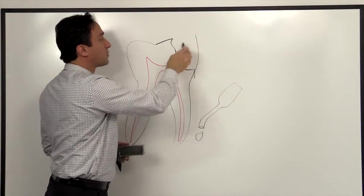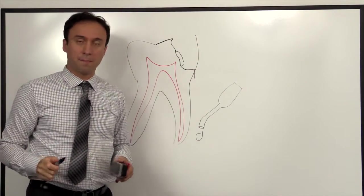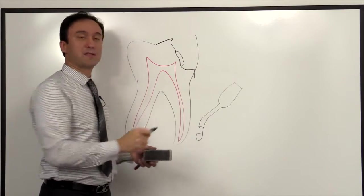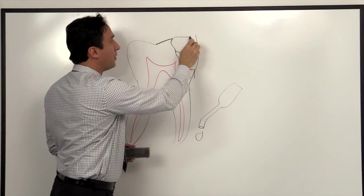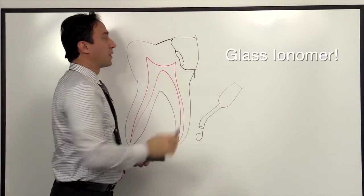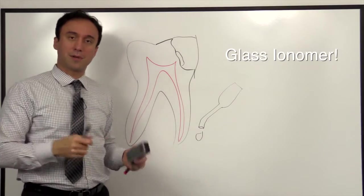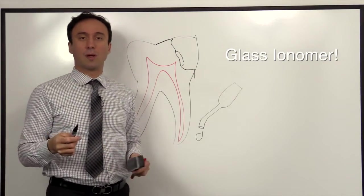And then the question becomes, what is the right material to restore the space? Well, because the bioceramic is fresh, you certainly can use composite. But one of the things that you could do is you could actually fill the whole space up with glass ionomer. Glass ionomer and bioceramics have very good relationship, and they work well together.